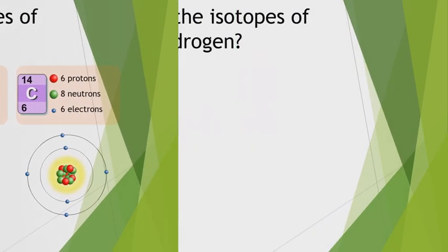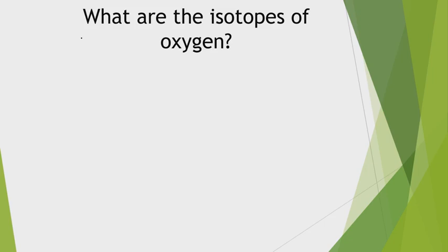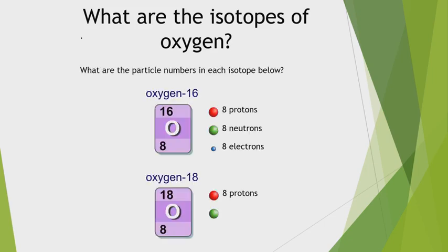Examples of isotopes: hydrogen has isotopes, and oxygen has isotopes. For oxygen-16 (atomic number 8): protons = 8, electrons = 8, neutrons = 16 − 8 = 8. Oxygen-16 and oxygen-18 are isotopes of oxygen — same element, same atomic number, different mass numbers.